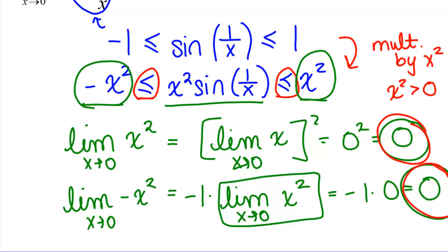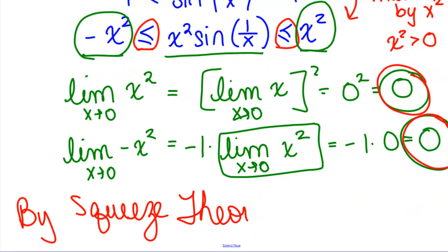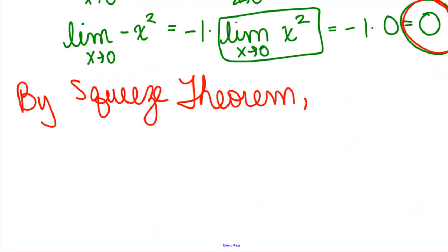And what that means is, by the squeeze theorem, the limit we care about, the limit as x goes to 0 of x squared sine of 1 over x is also equal to 0, because it's squished in between x squared and negative x squared.